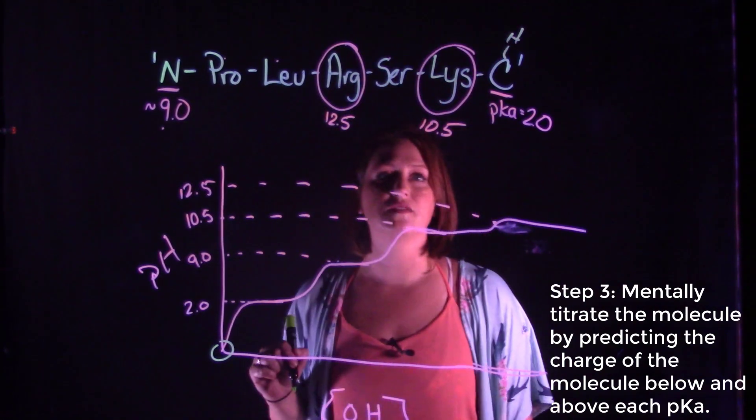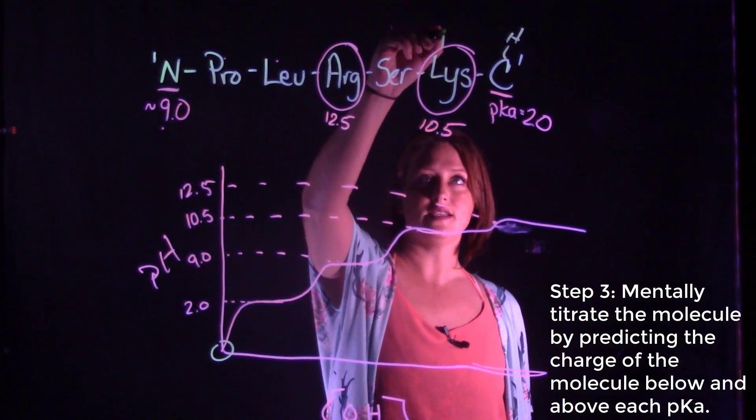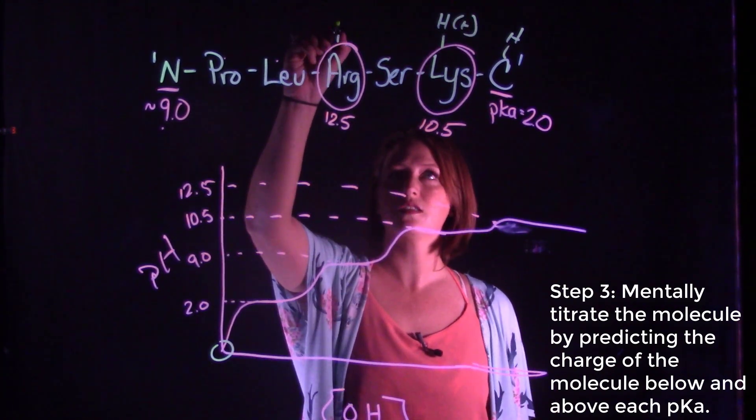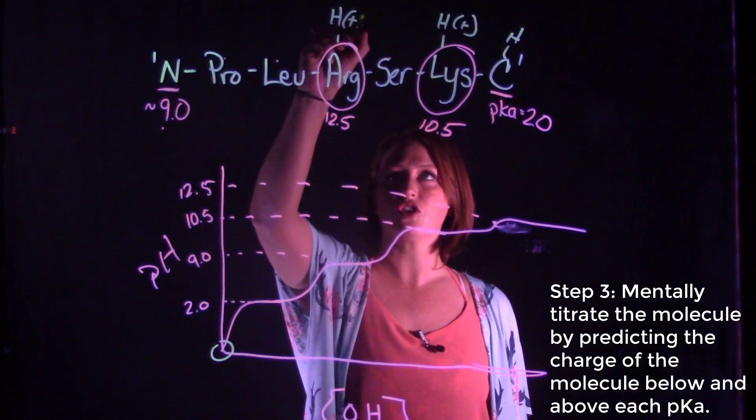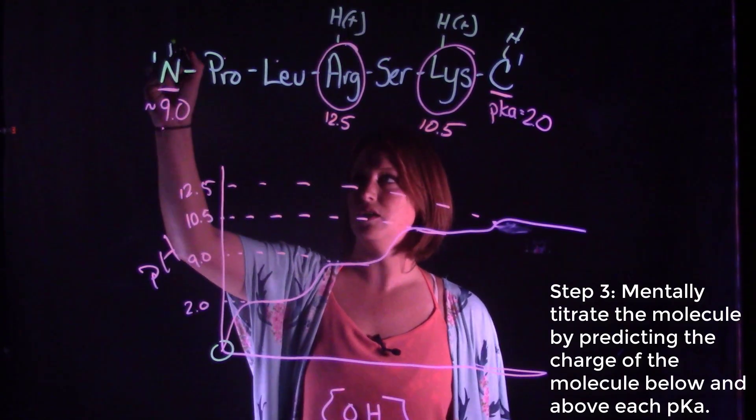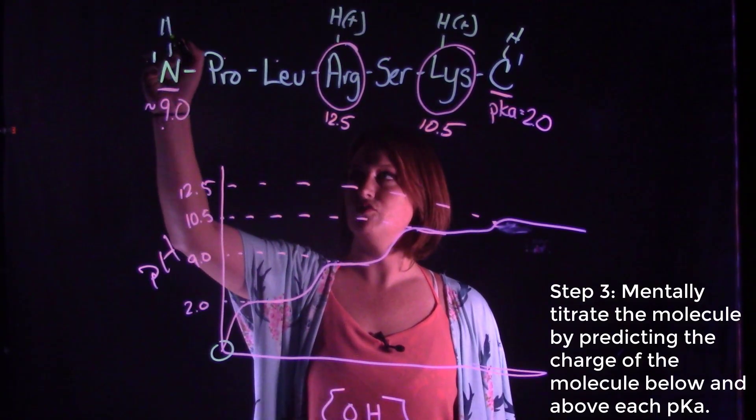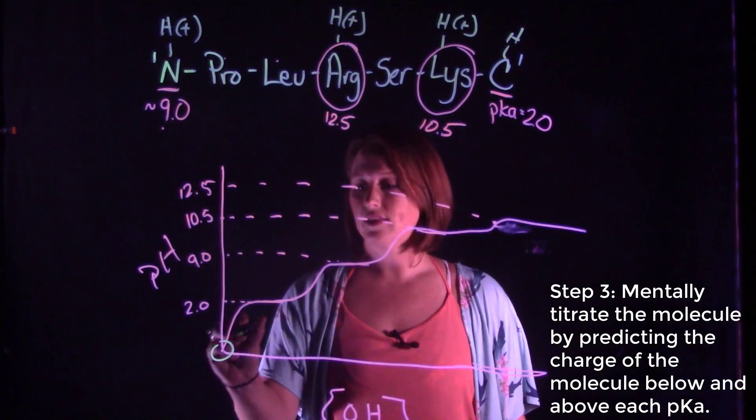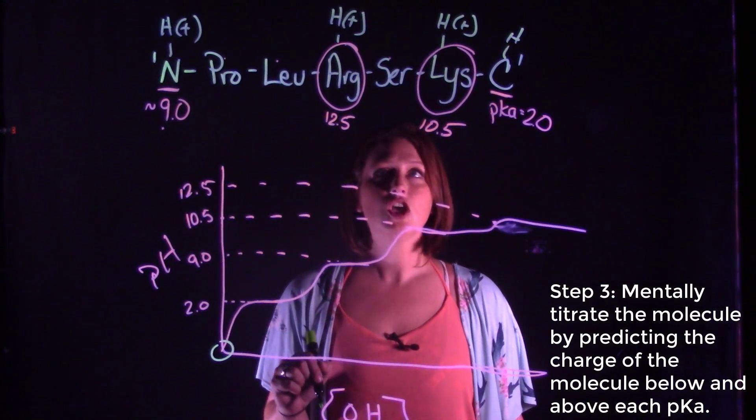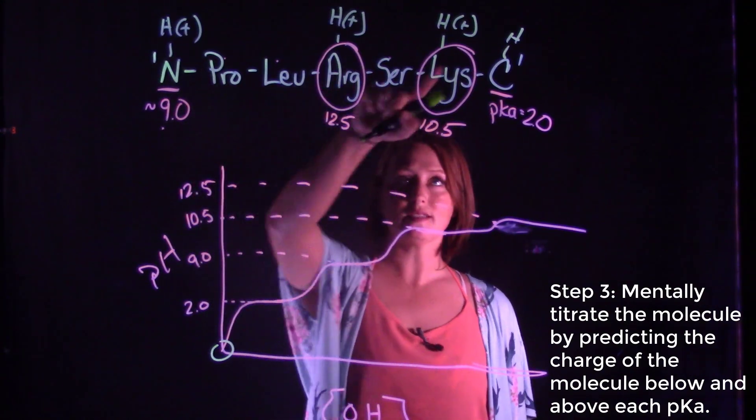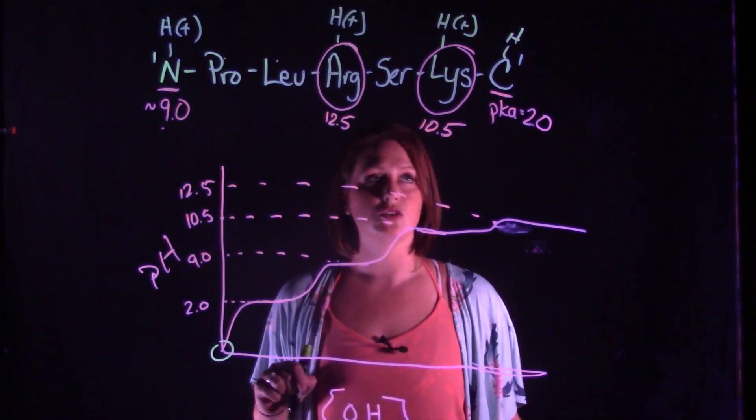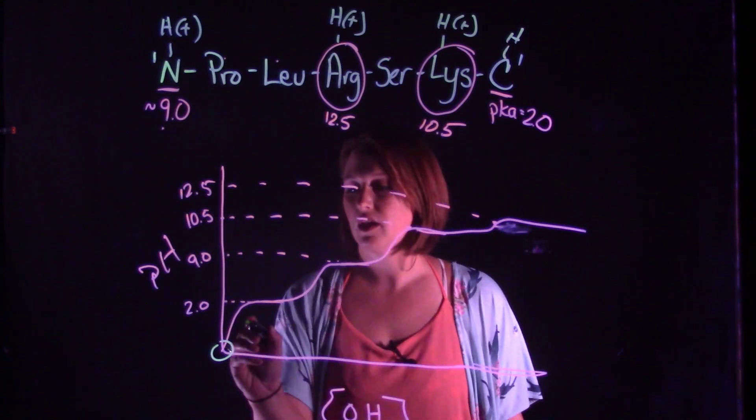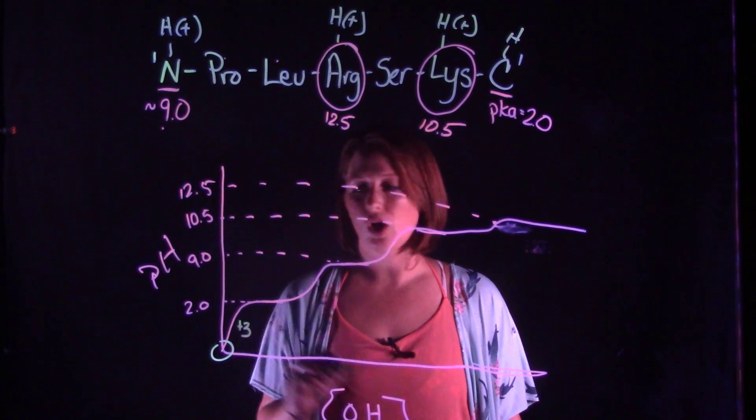If everything is protonated, the C-terminus has a hydrogen on it that gives it a neutral charge. Lysine's hydrogen is going to give lysine a positive charge. Arginine's hydrogen is going to give arginine a positive charge. And then the amino terminus hydrogen is also going to give us a positive charge. So overall at the lowest pH we will have three positive charges on our basic residues and then a neutral charge on our one acidic residue, giving us an overall plus three charge.